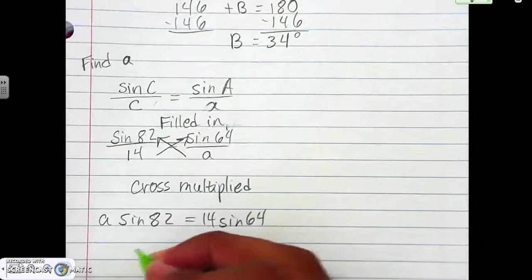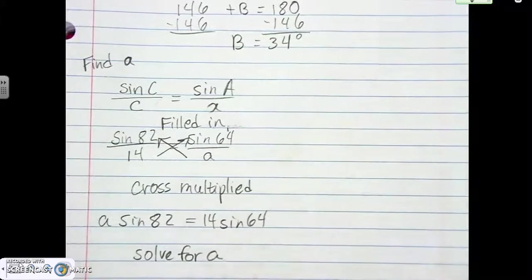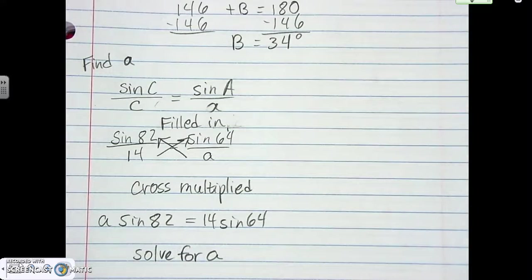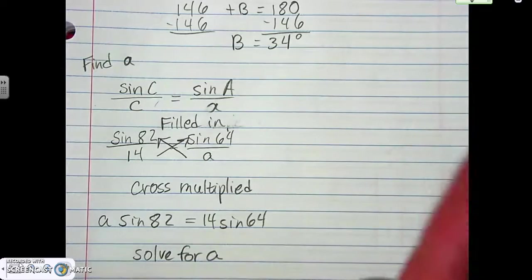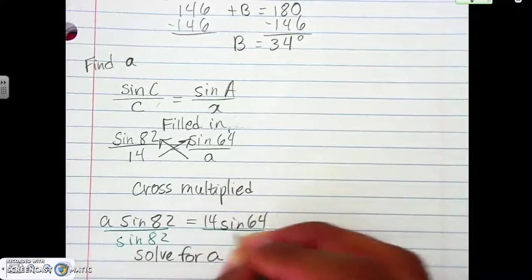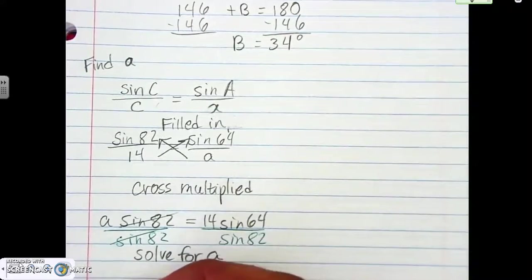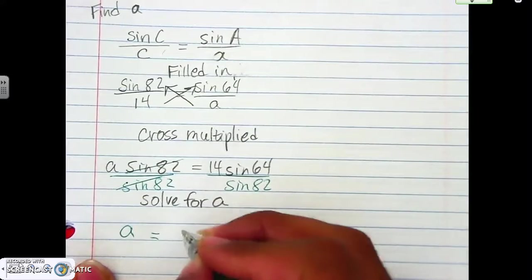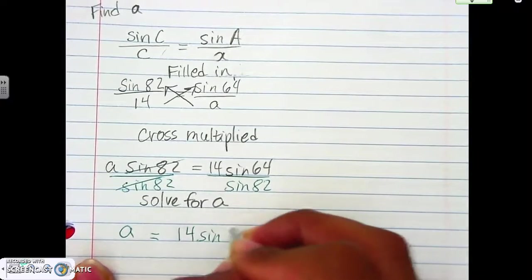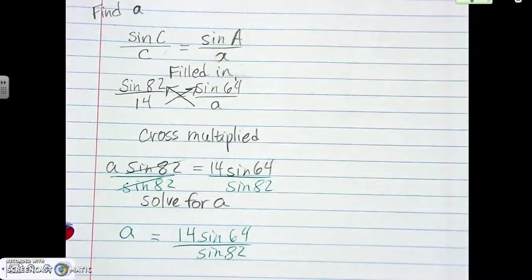And then we solve for A. And so here, to solve for A, we're going to go ahead and divide by the sine of sine 82, so we can get that by itself. So that cancels, and then just A equals this wonderful fraction: 14 sine 64, over sine 82. Put that to the calculator, and we get a decimal answer. Yay!